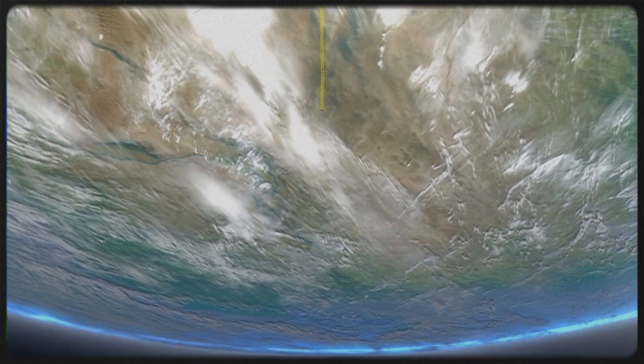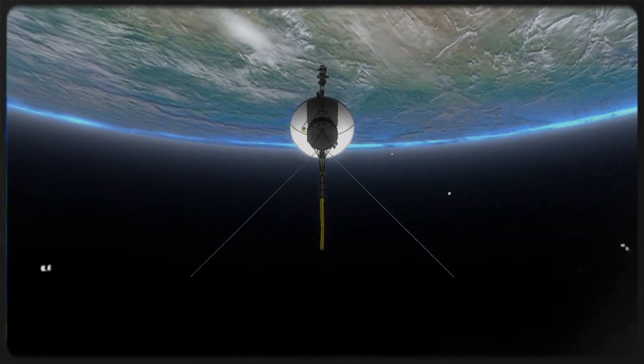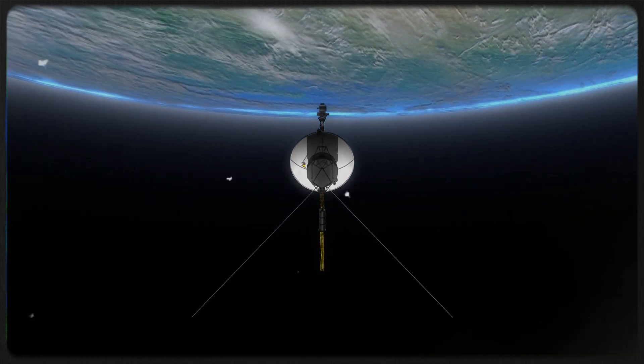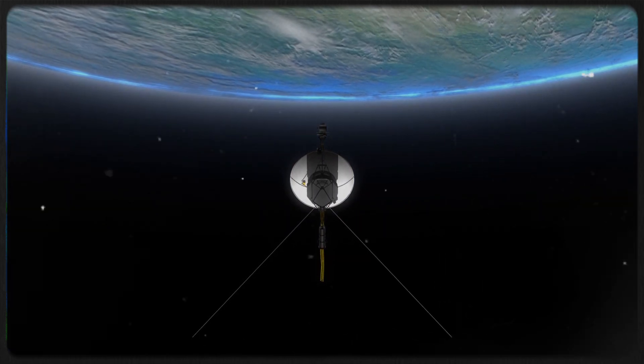Currently, both Voyagers are so far from Earth that a one-way radio signal traveling at the speed of light takes almost 22 hours to reach Voyager 1 and just over 18 hours to catch up with Voyager 2. They move forward by 3 to 4 light seconds every day.